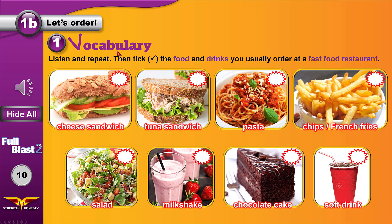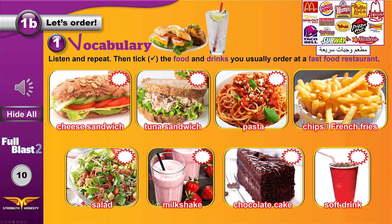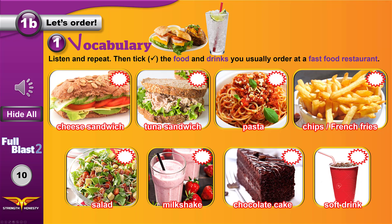Vocabulary: Listen and repeat, then tick the food and drinks. When you tick the food, you put a check mark here. You usually order at a fast food restaurant. Fast food is food that is prepared and cooked quickly at low prices, in restaurants like McDonald's and Burger King. Now repeat after me.